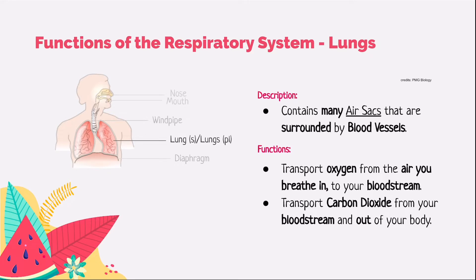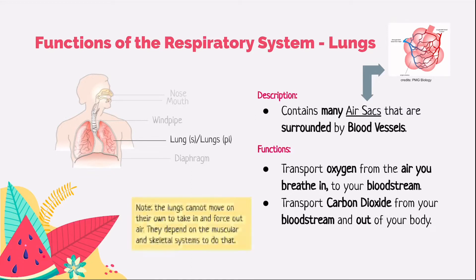Now, the lungs. The lungs contain many tiny air sacs, which are surrounded by blood vessels. The lungs transport oxygen from the air you breathe in to your bloodstream, and transport carbon dioxide from your bloodstream out of your body through the nose or mouth. It is important to note that the lungs cannot move on their own — they depend on the muscular system and the skeletal system to do that. For example, the diaphragm, which is a muscle, helps the lungs take in or force out air.